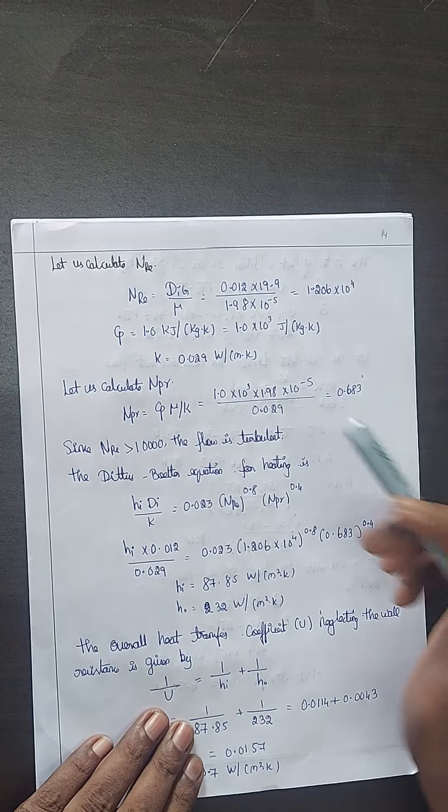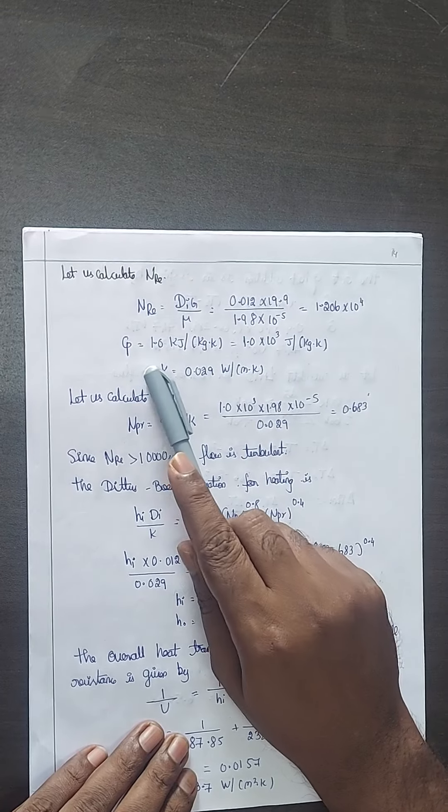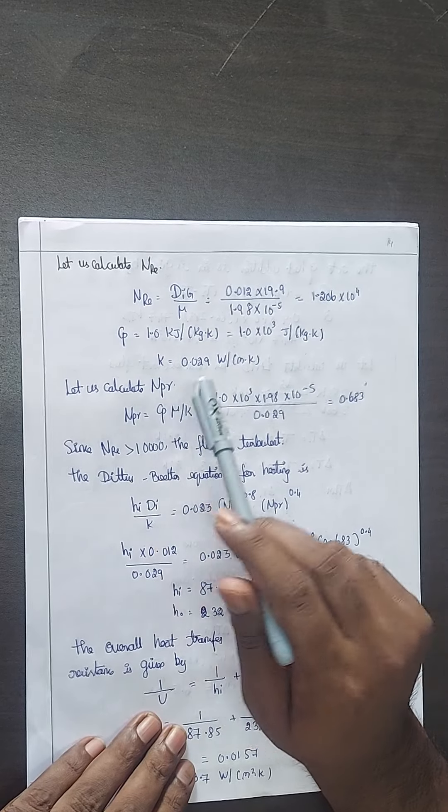First, calculate Reynolds number. Reynolds number is dG by mu. Substitute data values to get your answer. Cp value is 1 kJ per kg Kelvin. Now the Prandtl number,